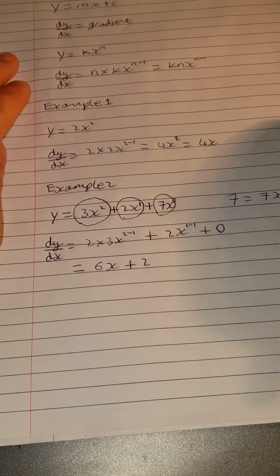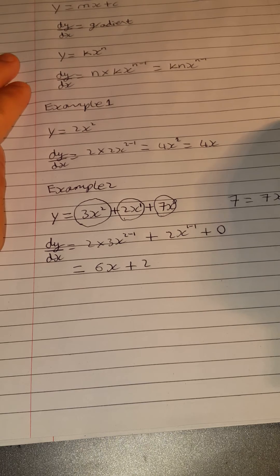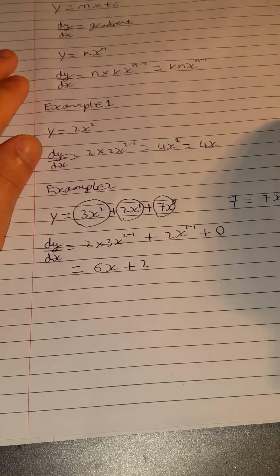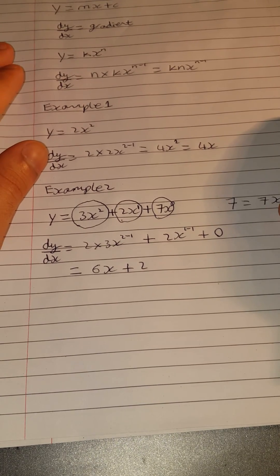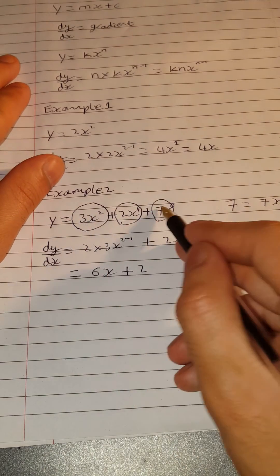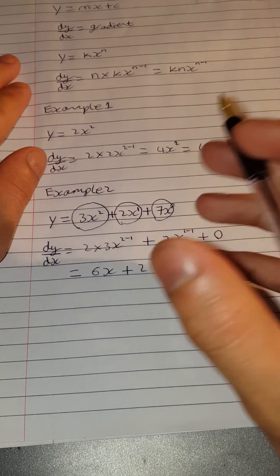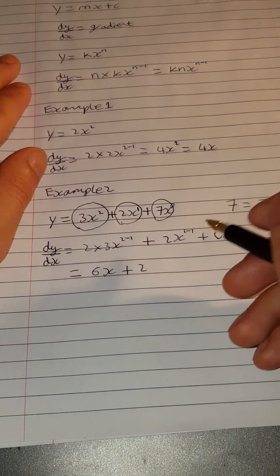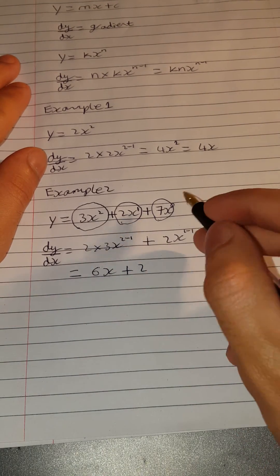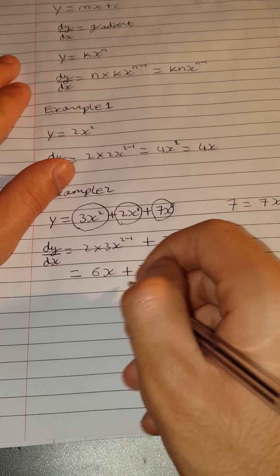In an exam, they might be tricky and they would say to you, here's the equation of a curve, find the gradient of the curve at a particular point. For example, they might just say, find the gradient of this curve when x equals 2.